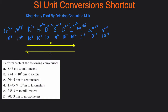K is kilo, H is hecto, then deca, then base — that's King Henry died by drinking chocolate milk. The base is when you don't have any prefixes, like if you just have grams or liters. Base is going to be 10 to the 0.